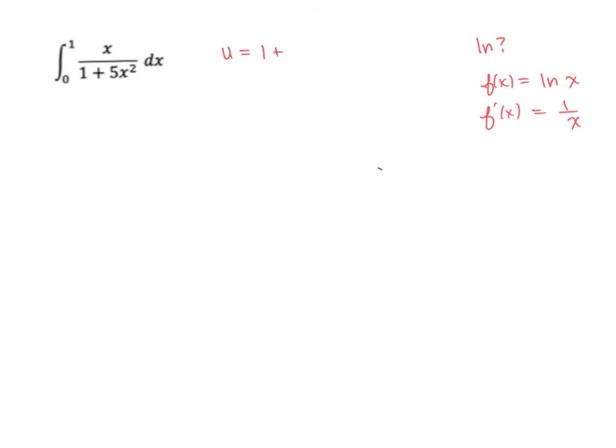So let's make sure we do this correctly. u equals 1 plus 5x squared. And then du equals. Now we're going to take the derivative of this. So the derivative of 1 is 0, and you have 10x dx. Now if you notice over here in the numerator, you have an x dx, but you don't have a 10. That means we can replace this, but not the 10. So in order to fix that, we're going to divide both sides by 10. And that's the same as multiplying by 1 tenth.